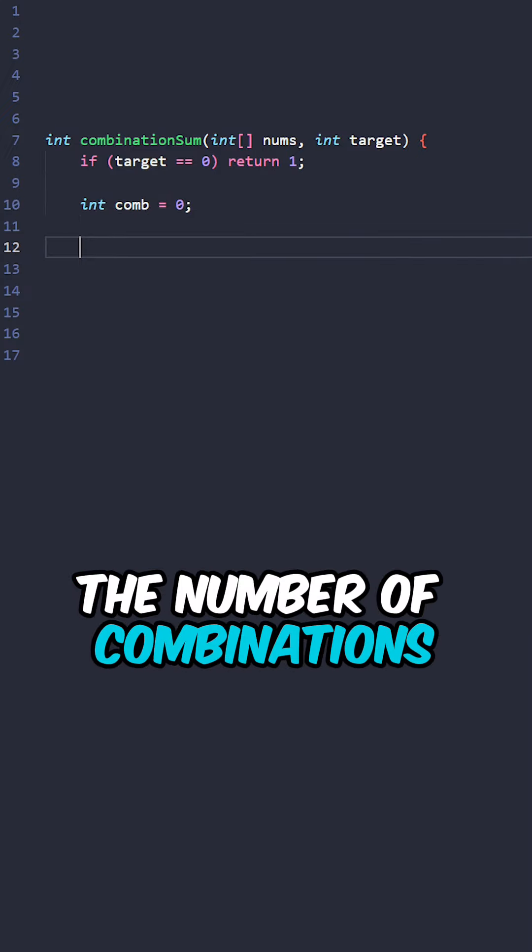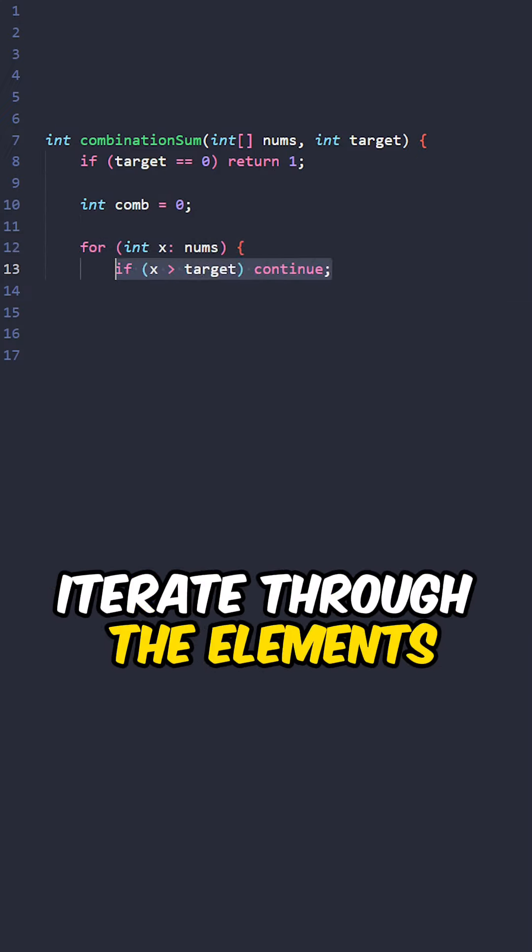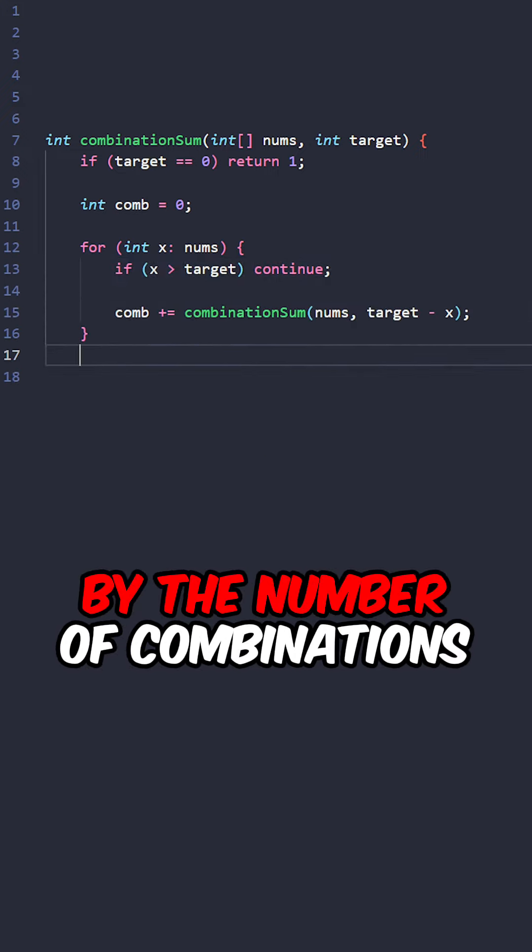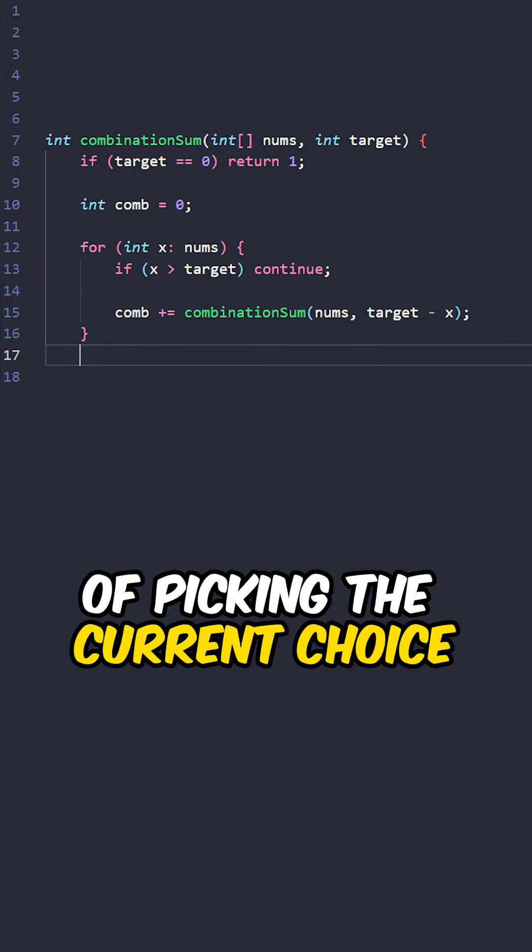Keep track of the number of combinations. Iterate through the elements. If the current element is greater than target, continue to next iteration. Increment combinations by the number of combinations of picking the current choice. Return combinations.